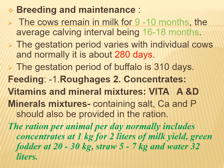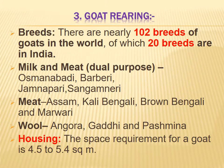Feeding: provide roughages, concentrates, vitamins, and mineral mixtures. Vitamin A and D mineral mixture containing salt, calcium, and phosphorus should be provided in the ration. The ration per animal per day normally includes concentrate at 1 kg per 2 liters of milk yield, green fodder 20 to 30 kg, straw 5 to 7 kg, and water 32 liters.